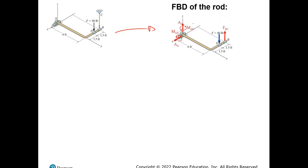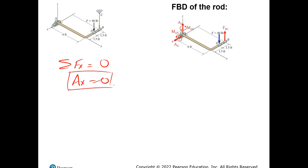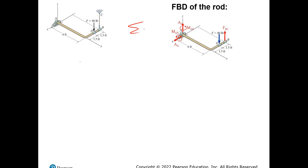We need to find all reactions and moments at A and also FBC. First: there are no forces in the X direction, so sum of forces in X = 0 gives AX = 0 immediately. Next, since all other forces point in the Z direction, sum of forces in Z = 0: AZ + FBC − 80 = 0. Also, there's no moment in the Z direction because there are no forces acting in the X direction, so MAZ = 0.